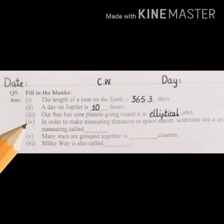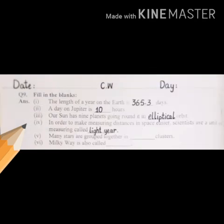Number 4. In order to make measuring distances in space easier, scientists use a unit of measuring called dash. Space mein measurement ke distance ko easy bananen ke liye, scientists measurement ka ek unit use kaartay hai jisay dash kaartay hai. In order to make measuring distances in space easier, scientists use a unit of measuring called light year. Space mein measurement ke distance ko easy bananen ke liye, scientists measurement ka ek unit use kaartay hai jisay light year kaartay hai.